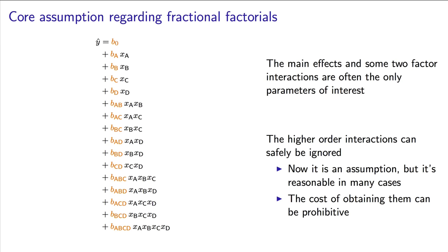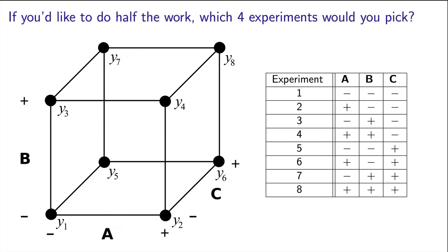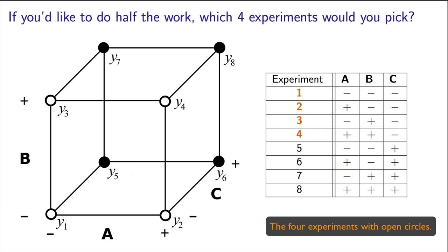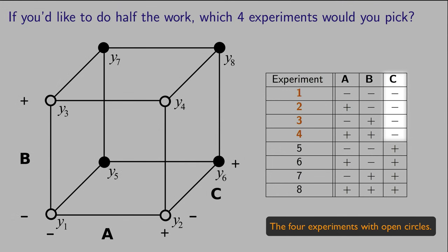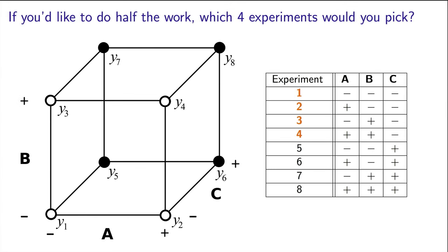Perhaps let me ask you to consider the question this way. If we only had the time and a budget to do 4 experiments, which 4 of these original 8 would you do? You might start by considering to only run the 4 experiments here at the front. But that won't work so well, because you will only have factor C at its low level. There will be no experiments at the high level for factor C, and so you won't really know what factor C does in the system.